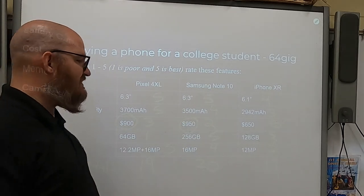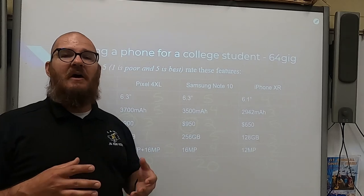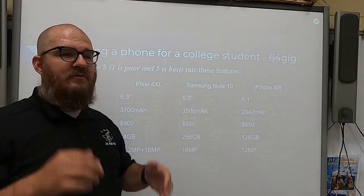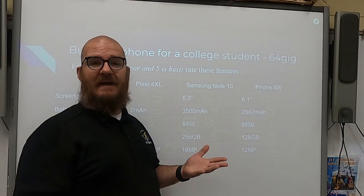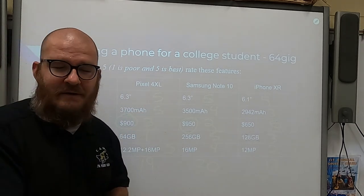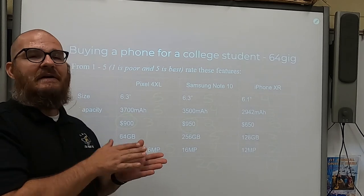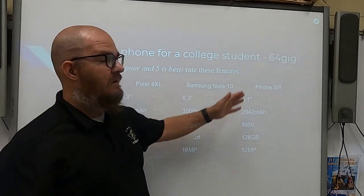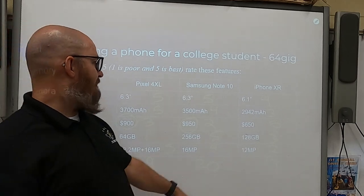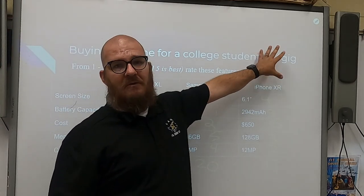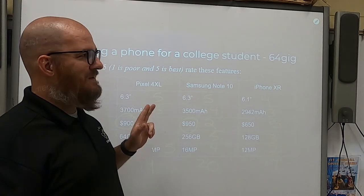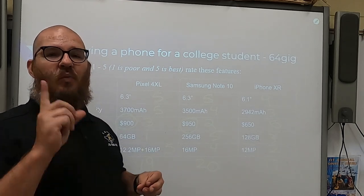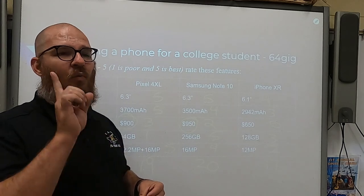That is how a decision matrix is used to make a decision about whatever thing you need to make, whatever design you need to choose. That is how you go from step five in the engineering design process of exploring possibilities into choosing one avenue, one choice. You can only make one choice — you pick one phone for that college student. This decision matrix helps you narrow it down to one design; you have to select one approach.